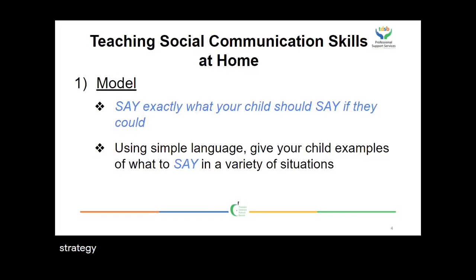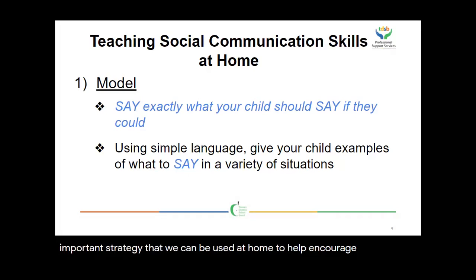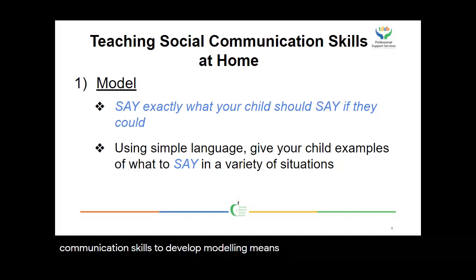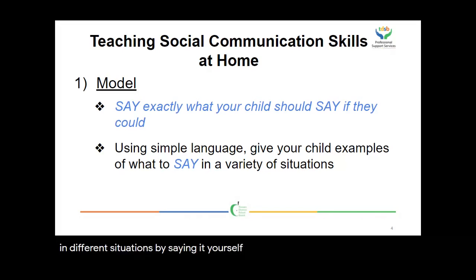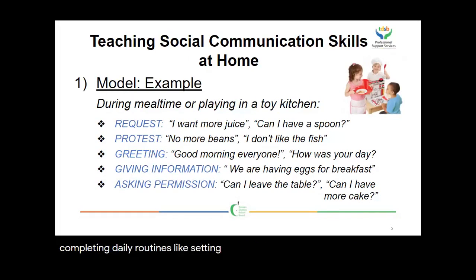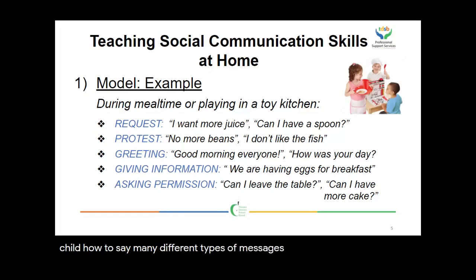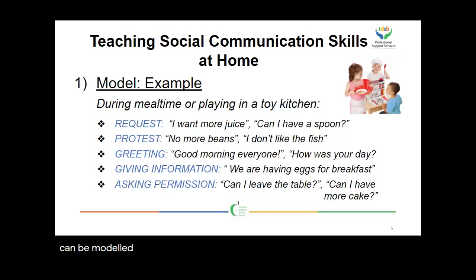The first strategy is modeling. Modeling is an extremely important strategy that can be used at home to help encourage social communication skills to develop. Modeling means to show your child what to say in different situations by saying it yourself. While completing daily routines like setting the table or cooking, you can show your child how to say many different types of messages by speaking aloud while completing your tasks. On this slide you can see different types of messages that can be modeled, and these familiar activities allow for lots of practice.